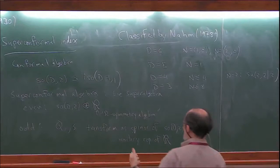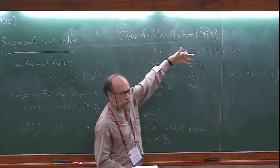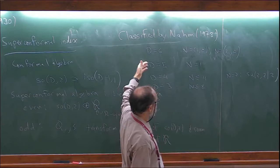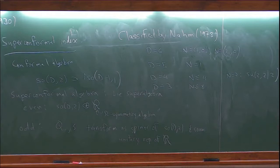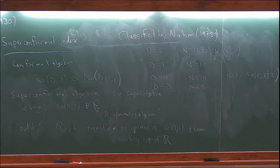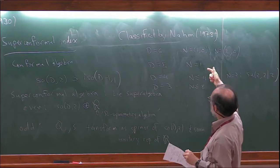If you're looking for supersymmetric fixed points of the renormalization group, you're only going to find them in certain dimensions. Nobody, up until almost 20 years ago, took seriously the possibility of D equals 5 and 6. Now we know there are theories in D equals 5 and 6, and everything in Nahm's classification actually has some realization in physics. These are the dimensions and values of N for which interacting quantum field theories occur.